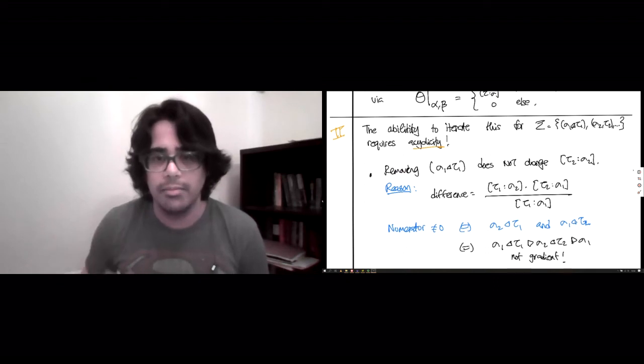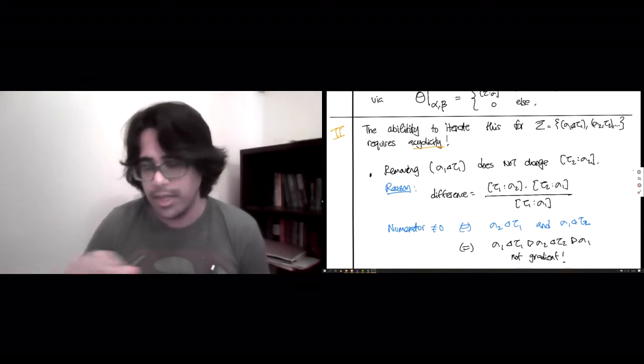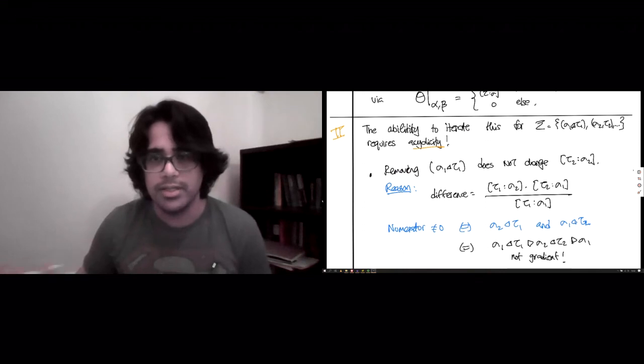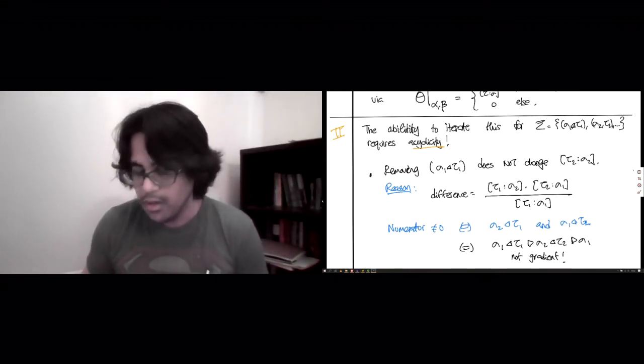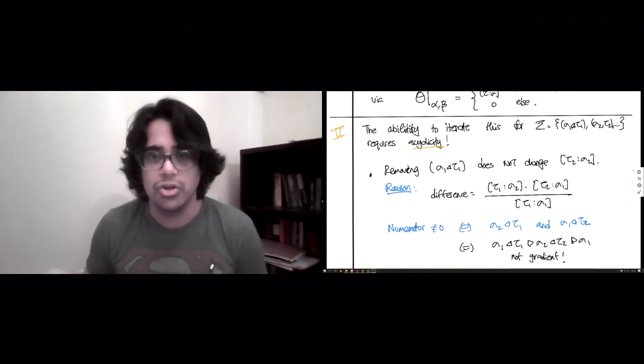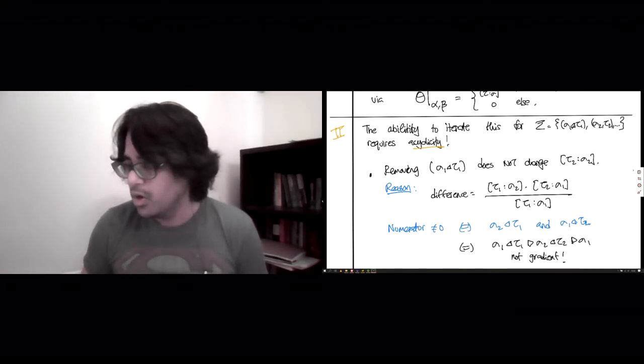So this is where the second bit comes in. You want to iterate the above, but you want to make sure that the Morse boundary stays the same as you add more and more cells to sigma. And that's, so those incidences should not change. And that's where the acyclicity comes in.